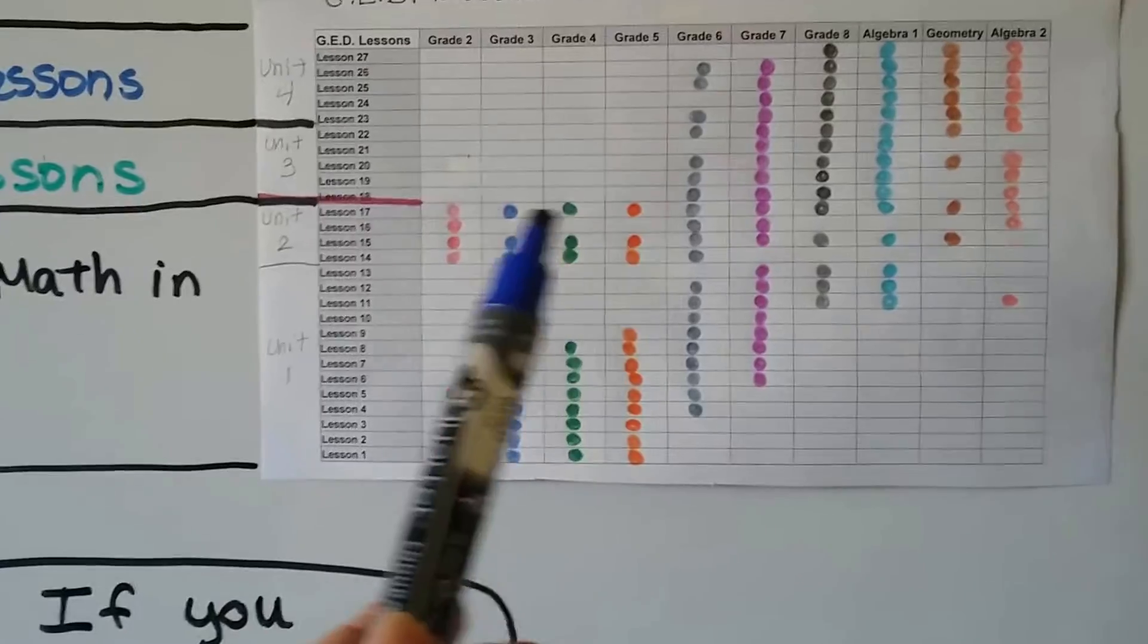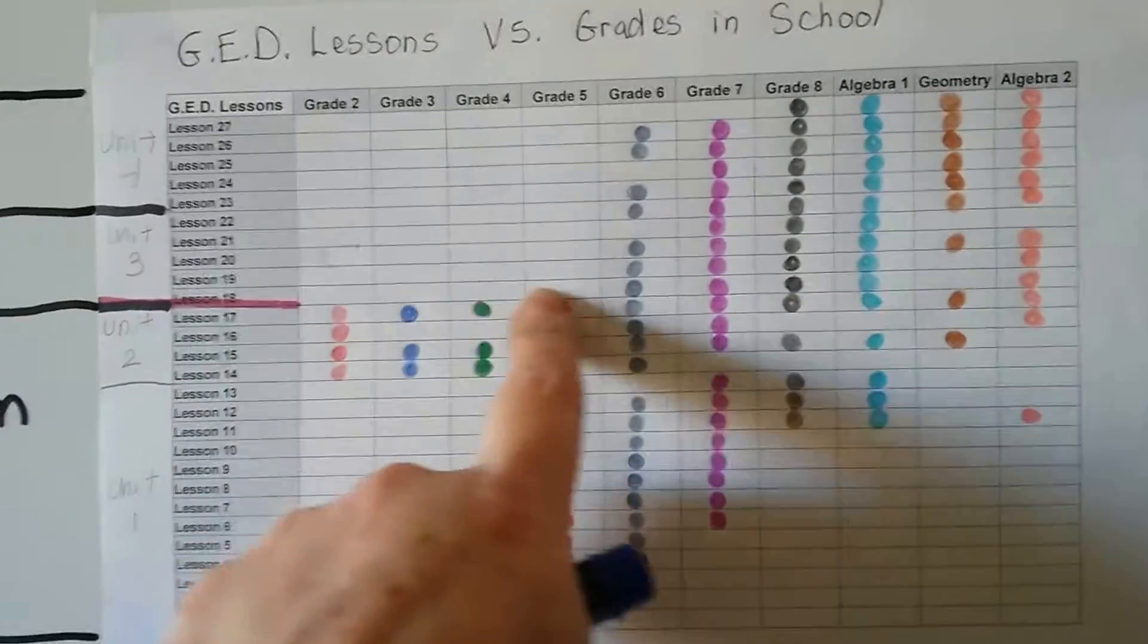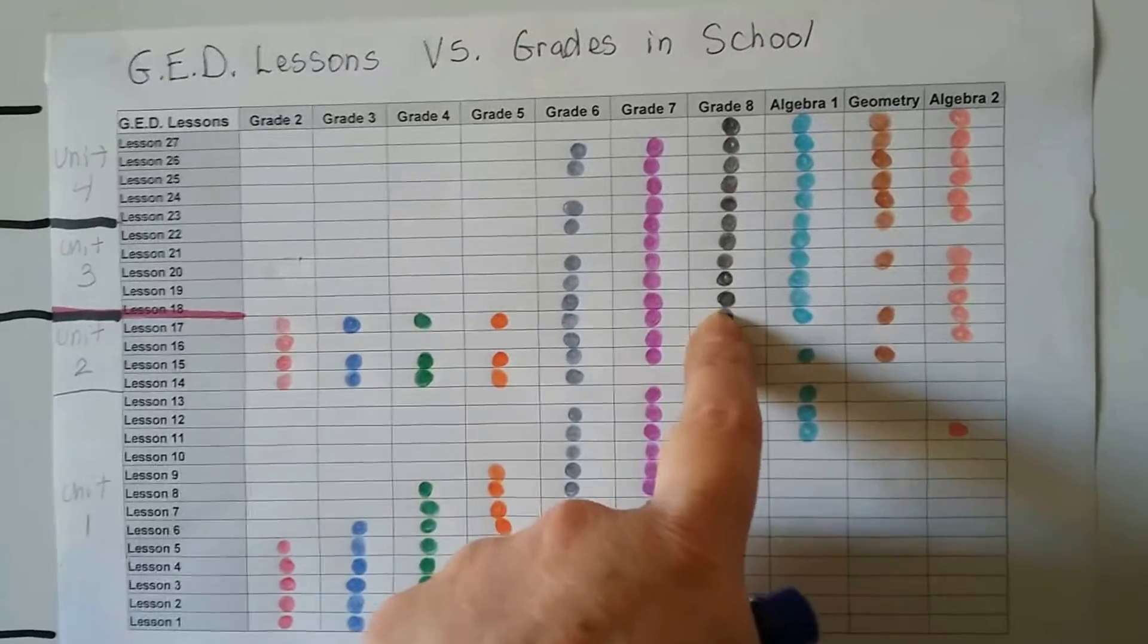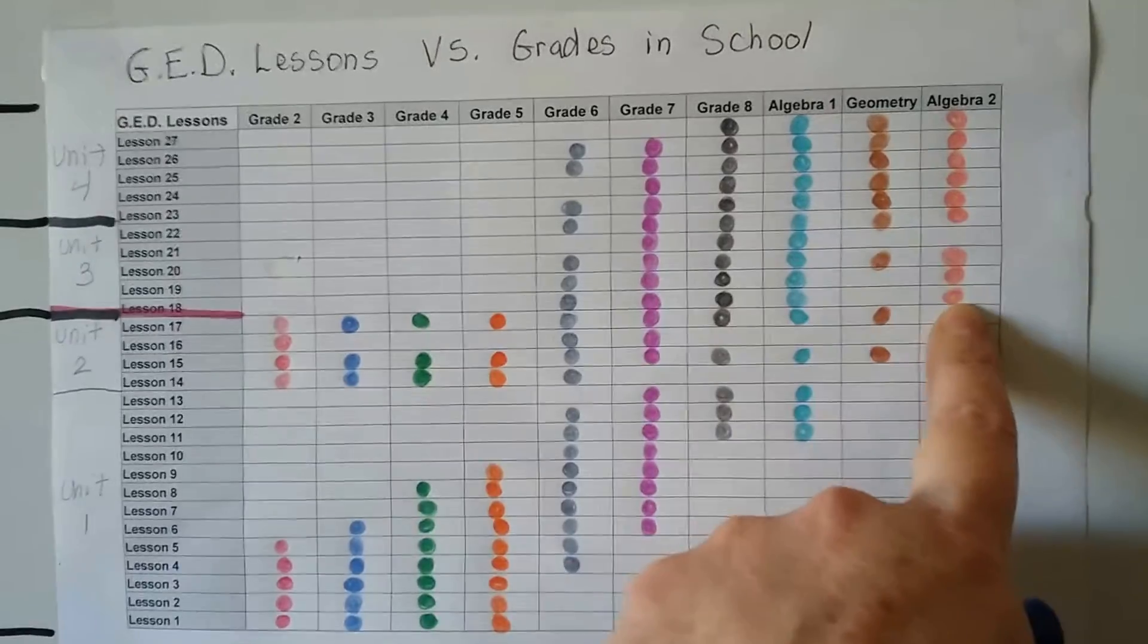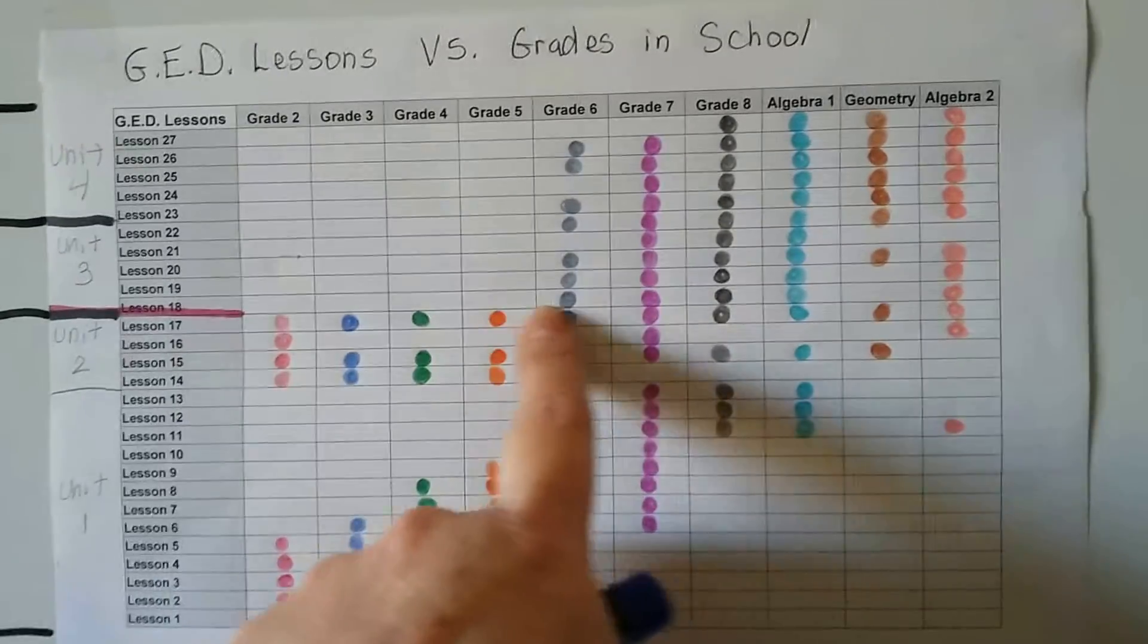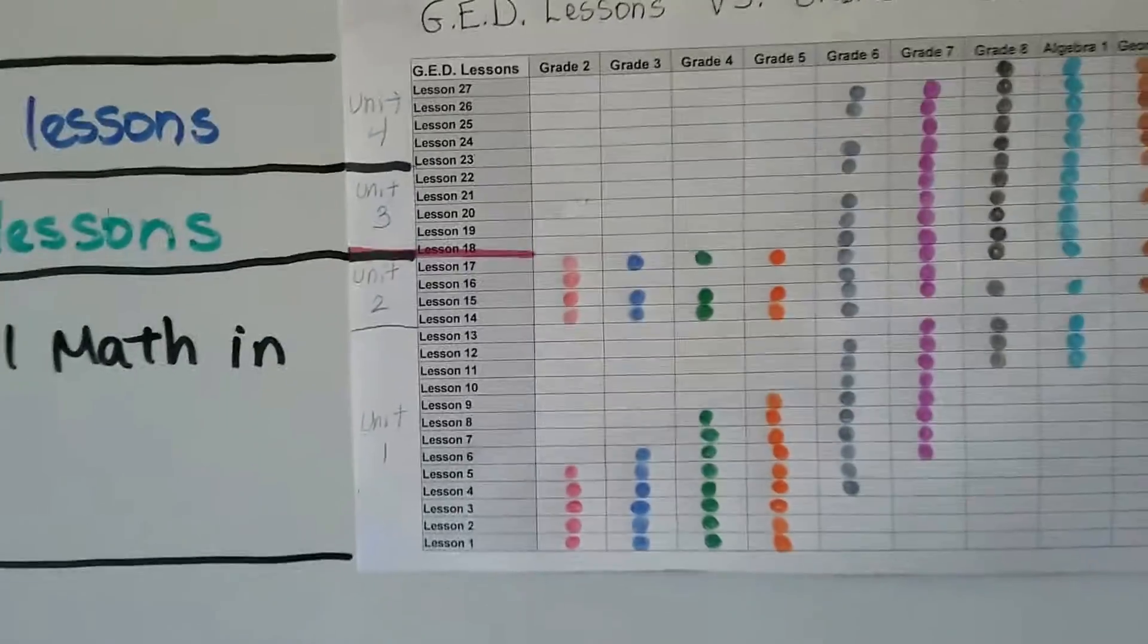But they overlapped. Look at lesson 19 and lesson 18 when we first started learning algebra. Well, that was taught in sixth grade, seventh grade, eighth grade, and ninth grade and some in algebra too. For that one lesson. So, the regular student got five years of schooling to learn what you're trying to learn in just one lesson.